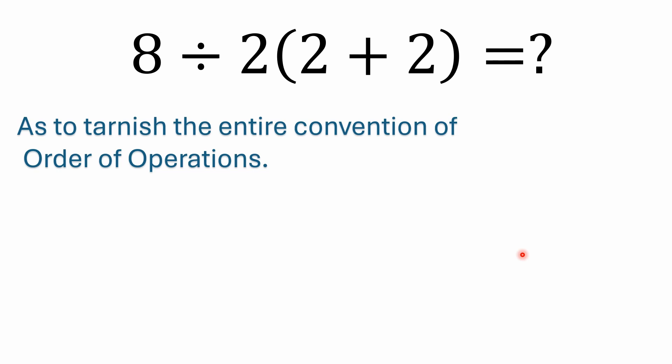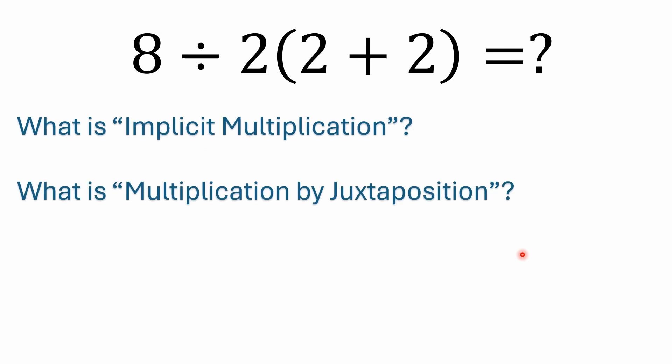And they do it in a way that kind of tarnishes the whole Order of Operations, really. But first of all, what I want to get into, I'll get into that more. But first of all, what is implicit multiplication? What is multiplication by juxtaposition?